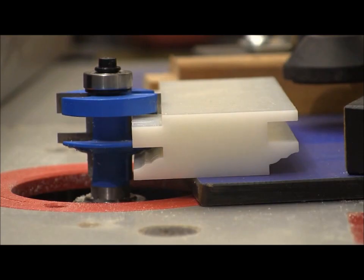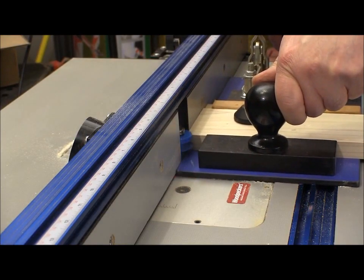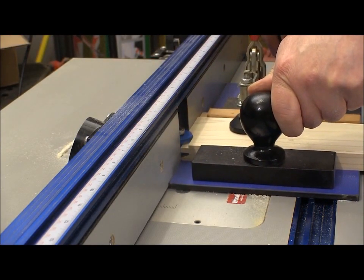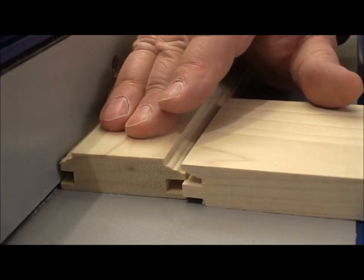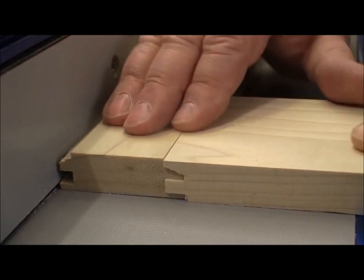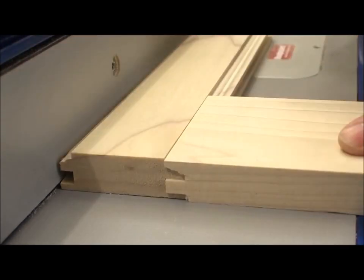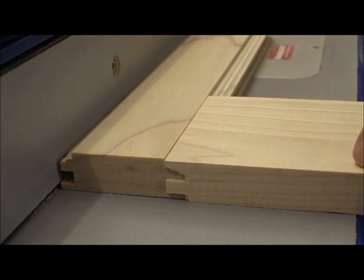Here you can see that the rail and stile profile fits together perfectly. It's flush and with a little clamping pressure that line disappears.